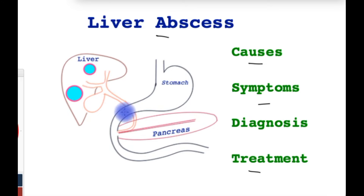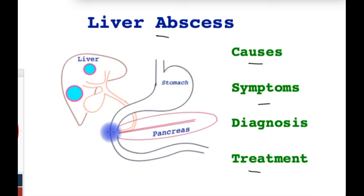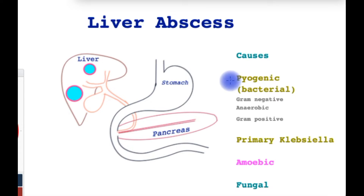The liver produces bile which comes out through this tube and drains into the bowel. That's the stomach connected to the small bowel and the pancreas at the back of the stomach.